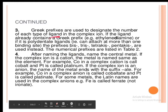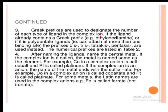The next rule: Greek prefixes are used to designate the number of each type of ligand in the complex ion. If the ligand already contains a Greek prefix, for example ethylenediamine, or if it is a polydentate ligand that can attach at more than one binding site, the prefixes bis, tris, tetrakis, pentakis, etc. are used instead. The numerical prefixes are listed in the table.